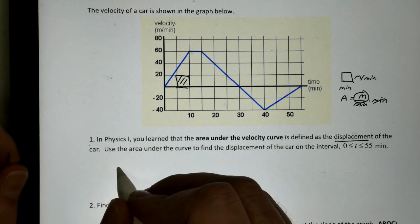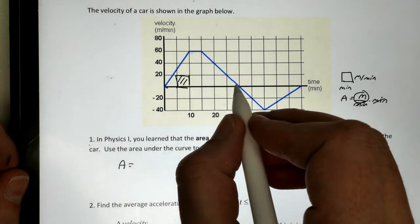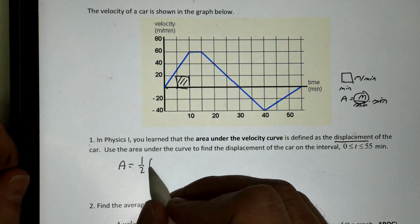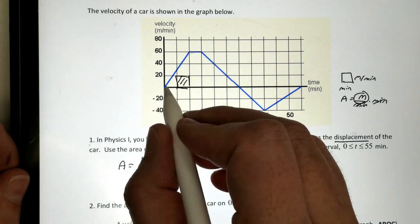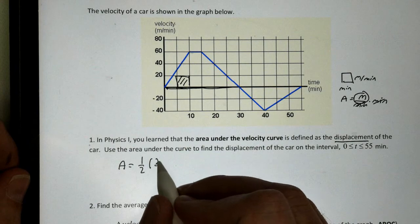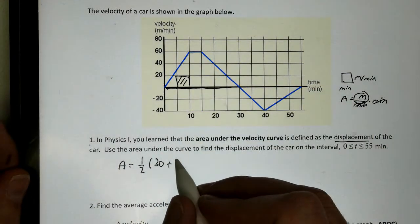So to get the area, for the first one, we have a trapezoid. Area of a trapezoid is one half the sum of the bases. Base one is down here, it has a base of 30, plus base two is the top here, and it has a width of 5, multiply that by the height of our trapezoid, which is going to be 60.